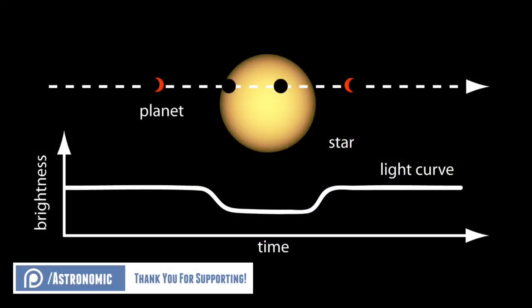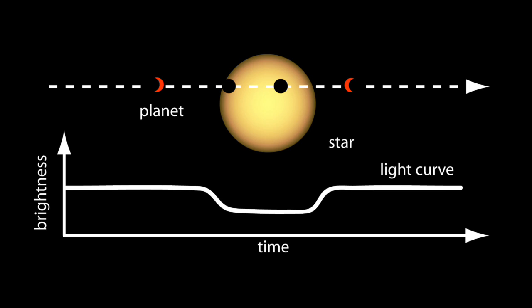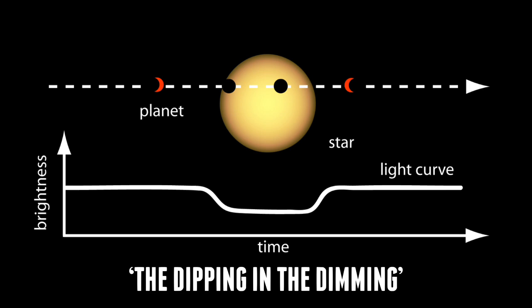In the case of the transit method, planets are detected when they pass directly in front of their star, causing it to dim. From this, you can figure out the size and mass by just seeing the dipping in the dimming.